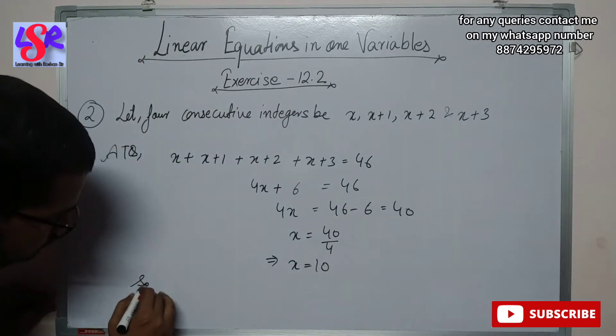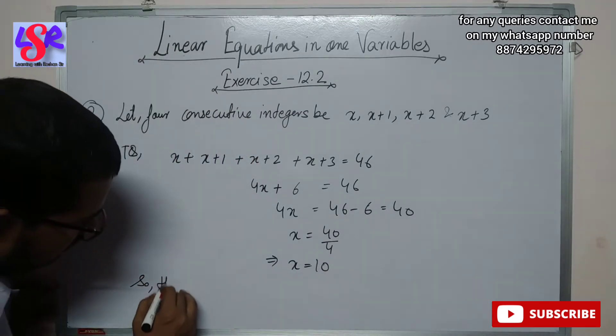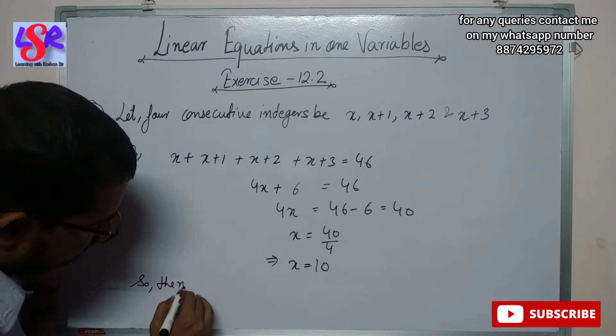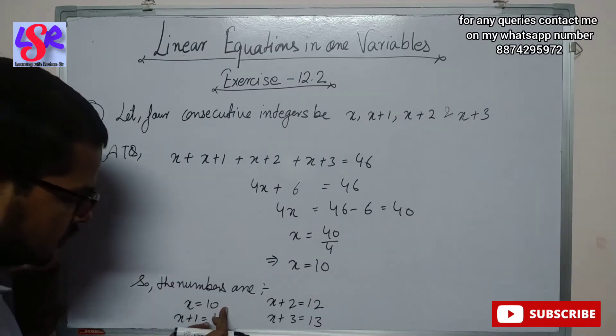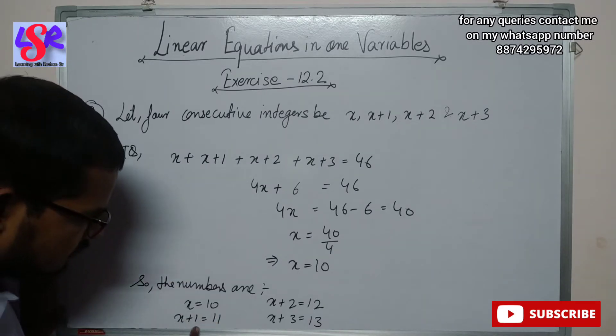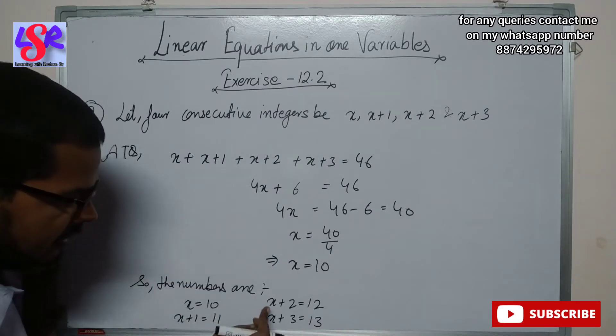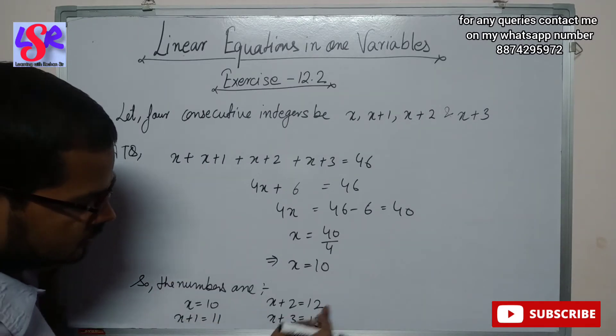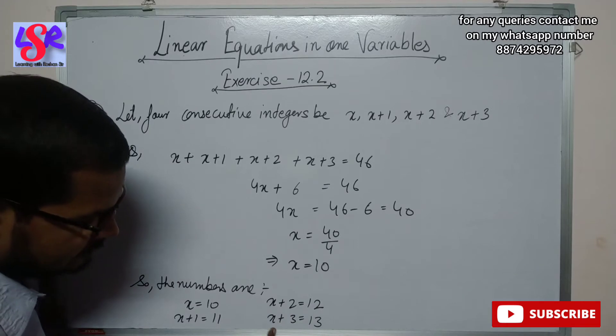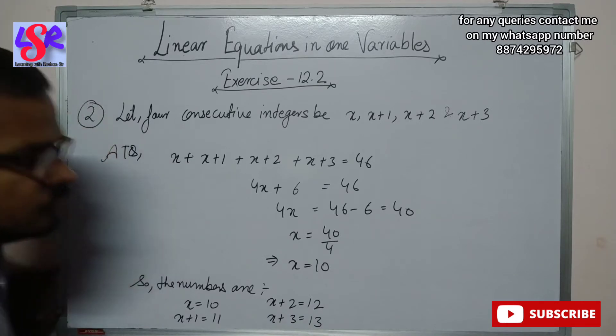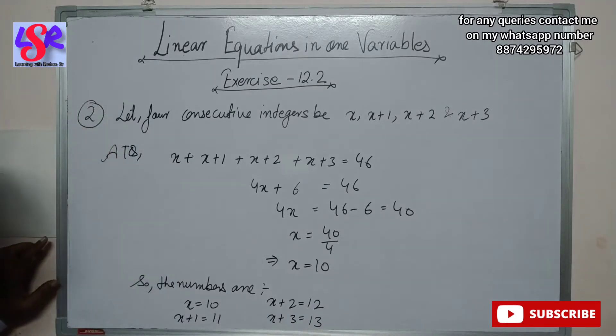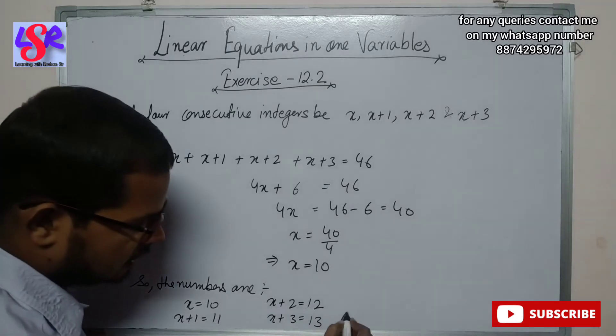Therefore x equals to 10. So the numbers are x equals to 10, x plus 1 equals to 11, x plus 2 equals to 12, x plus 3 equals to 13 as the answer.